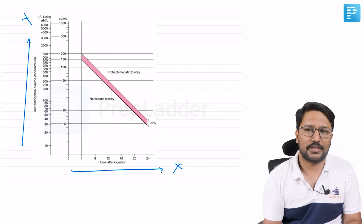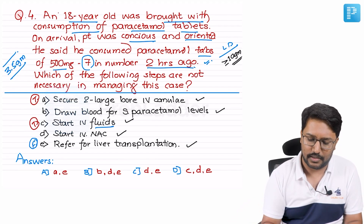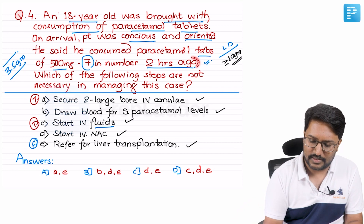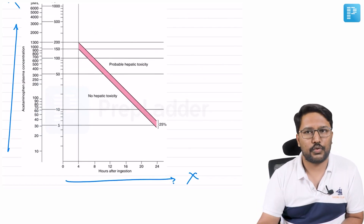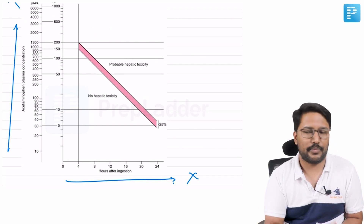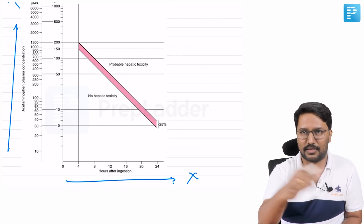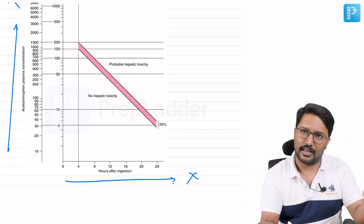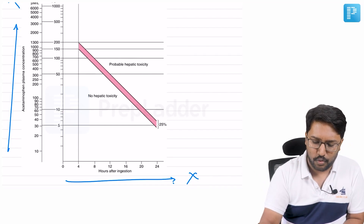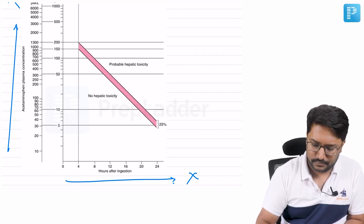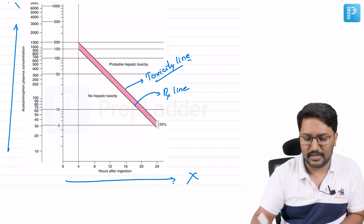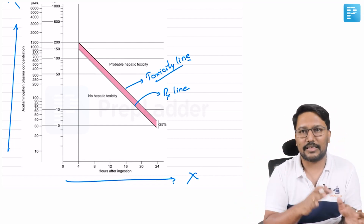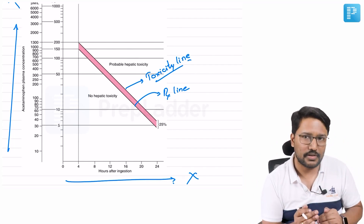This patient presented two hours after consumption. On the nomogram, the standard approach is: get serum paracetamol levels, plot the value based on time of sample collection after consumption. We have a toxicity line and a treatment line. Any paracetamol value above the toxicity line is considered toxic and likely to cause acute liver failure; below it is probably non-toxic.